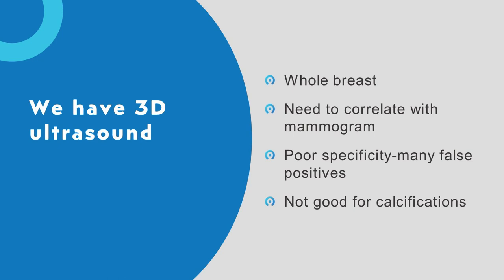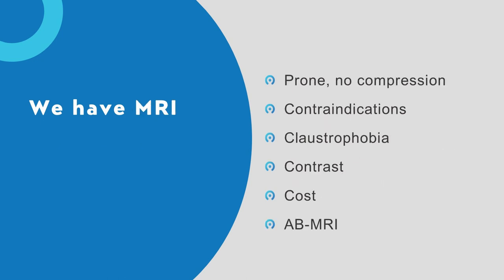We want a technology that's good for calcifications, good in dense breasts, and can use contrast. MRI of course is prone, but there are contraindications — embedded devices, claustrophobia — some people just can't stay in that tunnel. MRI does have contrast, which is great. Gadolinium deposition concerns with newer agents have largely not held up. MRI is very expensive, and the MRI machine is very expensive. These are the reasons why it'd be nice to have an alternative, so long as it's not inferior. Abbreviated MRI is a newer option that gives you MRI benefits with lower cost.